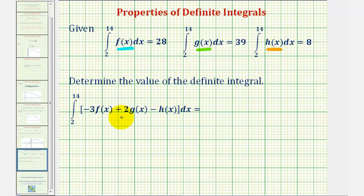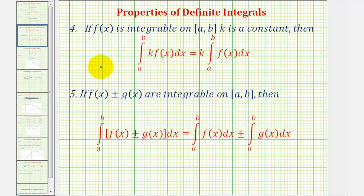So to find the value of this definite integral, we'll be applying two properties of definite integrals. First, if we have the integral of a constant k times f of x from a to b, we can factor out this k, so this is equal to k times the definite integral of f of x from a to b.